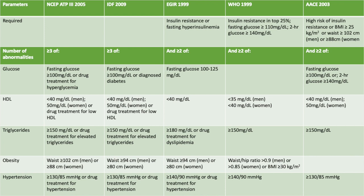Also, in regards to waist circumference, men have to have at least 102 cm or more, and women at least 88 cm. For blood pressure, the cutoff value is 130 over 85 mmHg, or drug treatment for hypertension.